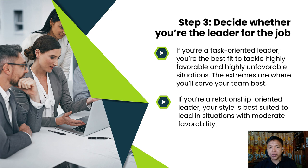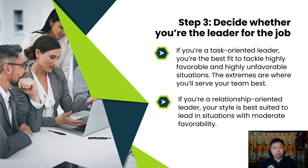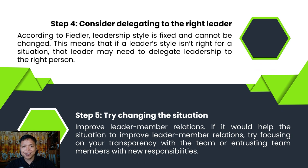Step 3: Decide whether you're the leader for the job. Now that you have a grasp on your leadership style and the favorableness of the situation, you can determine whether you're the right leader for the situation. If you're a task-oriented leader, you're the best fit to tackle highly favorable and highly unfavorable situations. If you're a relationship-oriented leader, your style is best suited to lead in situations with moderate favorability. Step 4: Consider delegating to the right leader. According to Fiedler, leadership style is fixed and cannot be changed. This means that if a leader's style isn't right for a situation, that leader may need to delegate leadership to the right person.